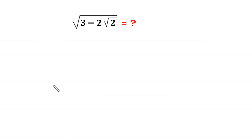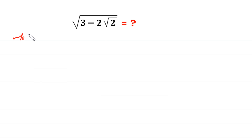Hello, welcome to how to solve this very nice square root algebra simplification problem: square root of 3 minus 2 times square root of 2. We will solve it by two methods. So let's start with method 1.